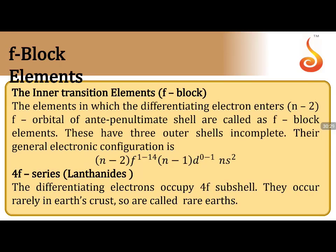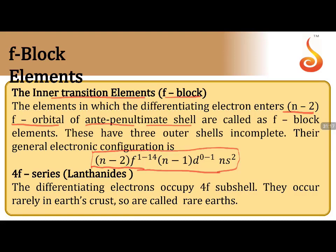F block elements are called inner transition elements because they are placed between two transition elements. The differentiating electron enters into the (n-2)f orbital — the anti-penultimate shell. Elements where the electron enters f orbitals are called F block elements, showing properties of elements with incompletely filled f sub-shells. The general electronic configuration is (n-2)f^(1-14) (n-1)d^(0-1) ns².